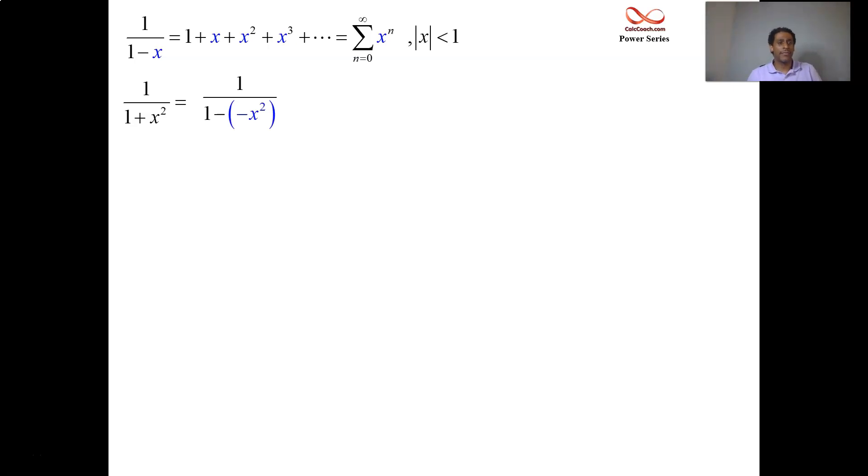So what do we do? We make it a minus by making the plus subtracting a negative. Now that's an x squared there. Once you're in this format, 1 over 1 minus something, it's exactly that something that takes the place of all those x's there.